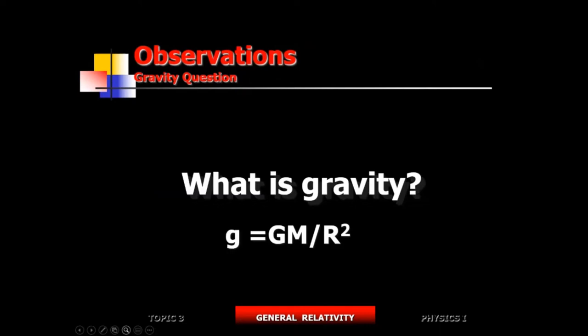A force acting on a mass causes it to accelerate. Falling objects accelerate, meaning there's a force acting on them — we call it gravity. This formula tells you why all objects fall at the same rate: the rate depends on the mass of the planet and is inversely related to the square of the size of the planet. The mass of the falling object doesn't appear in the final formula.